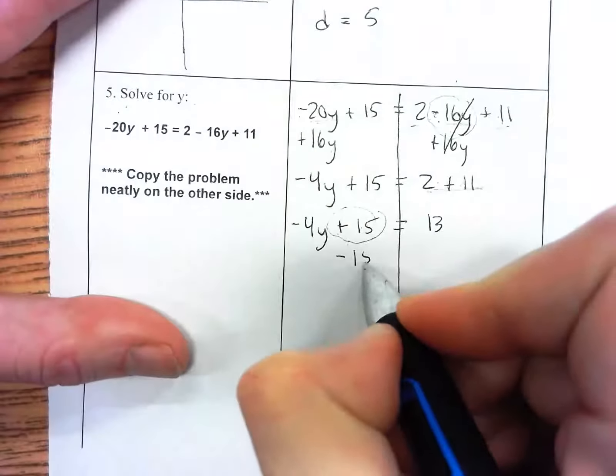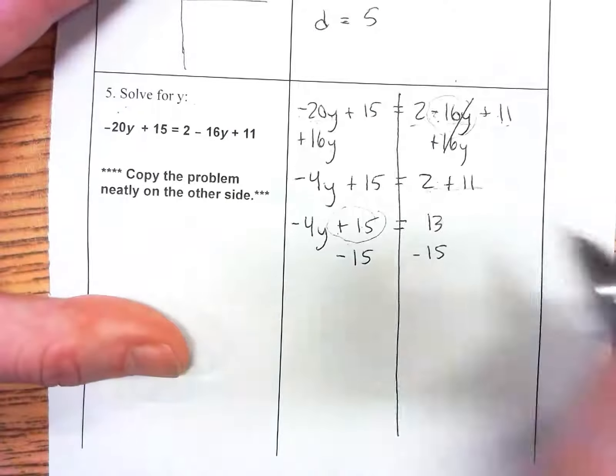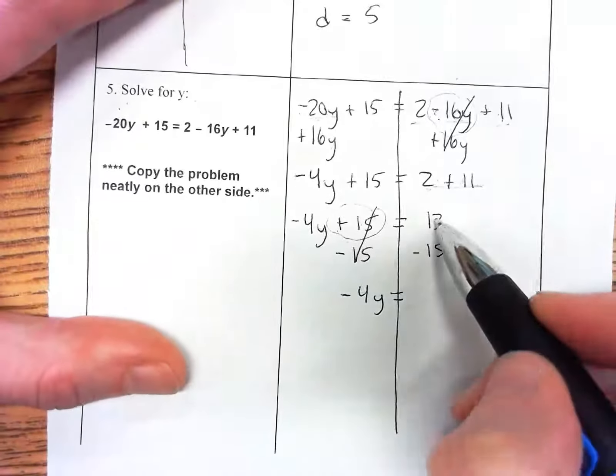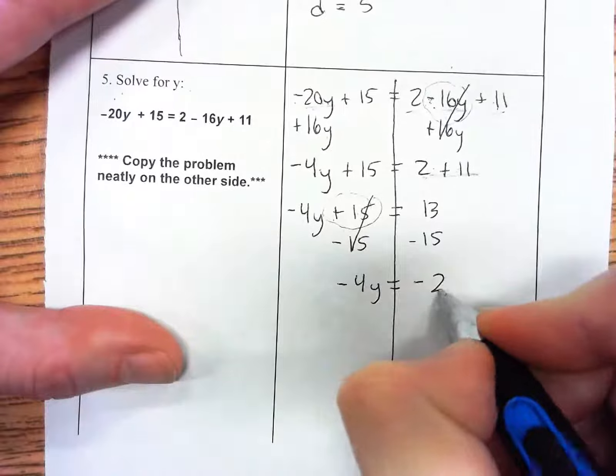I'm going to subtract 15 on both sides. This cancels and I'm left with negative 4y equals 13 minus 15, which is negative 2.